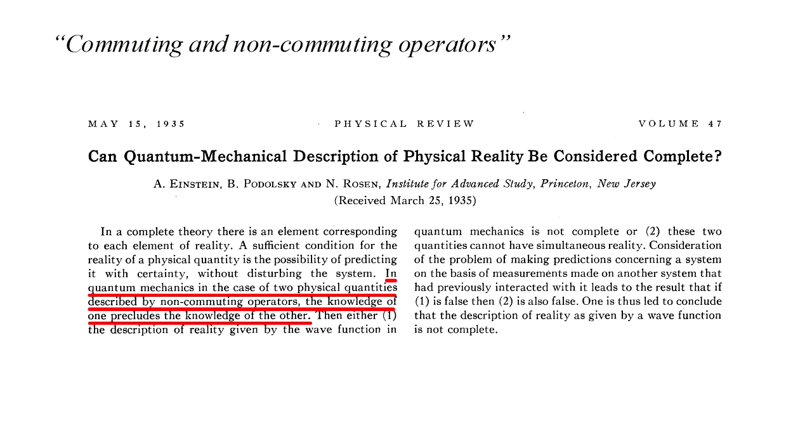This was brought to light in a 1935 paper by Einstein, Podolsky, and Rosen, titled, Can quantum mechanical description of physical reality be considered complete? Their argument rests on the fact that, quote, in quantum mechanics in the case of two physical quantities described by non-commuting operators, the knowledge of one precludes the knowledge of the other.